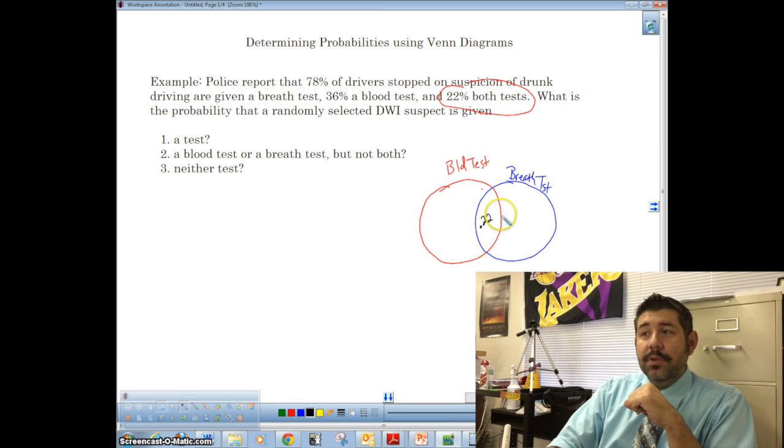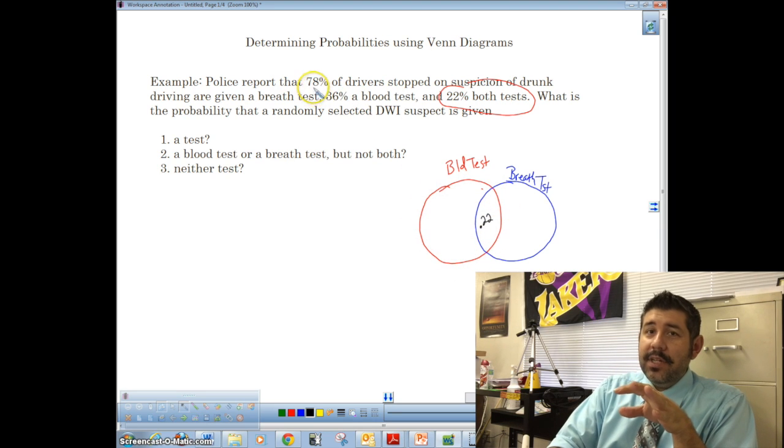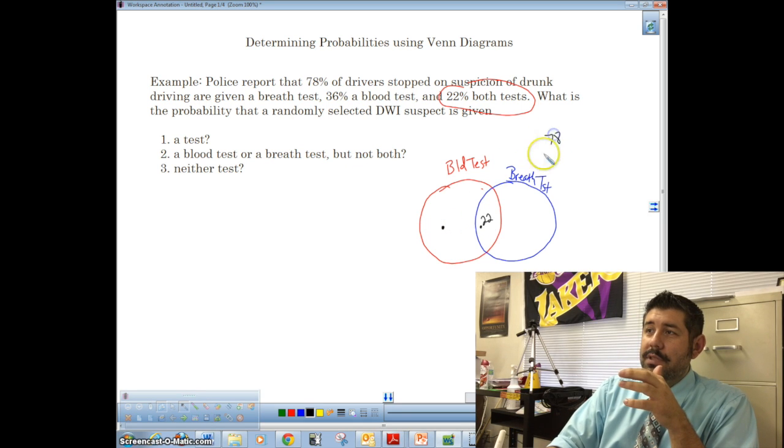So if both tests are 22%, then this entire thing here, all a blood test is 78%. How much are just blood tests, not part of both of them? Okay, well, what we would do is we would take 78% and subtract 22% from that. All right, and that's going to give us 56%, right? 56%, so 0.56.